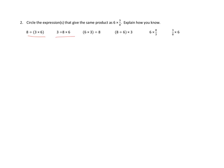Let's take a look first at problem number 2, and I'm going to do a part of this problem. Problem number 2 says, circle the expressions that give the same product as 6 times 3 eighths. Explain how you know.